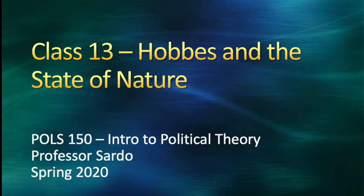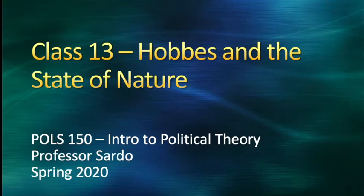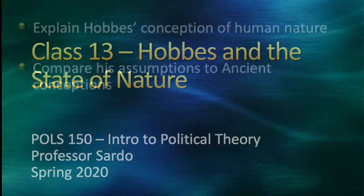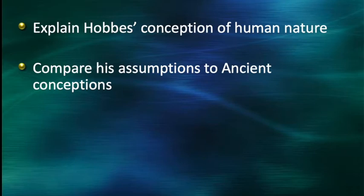Today we are moving forward a good century or so into the future to the 17th century to look at Thomas Hobbes' canonical work of political theory, Leviathan. Today we're going to be focusing on book one of Leviathan, Hobbes' conception of human nature, and we're going to be focusing mostly on how this account of human nature is different from the way that the ancient thinkers conceived of human nature.